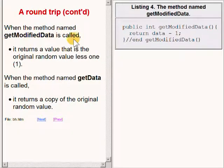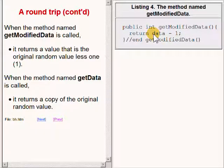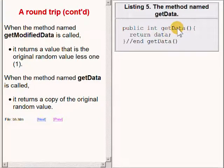When the method named getModifiedData is called, it returns a value that is one less than the original random value stored in the instance variable named data. When the getData method is called, it returns a copy of the original random value.